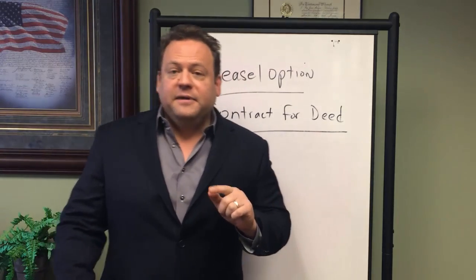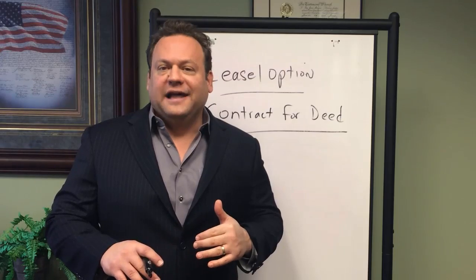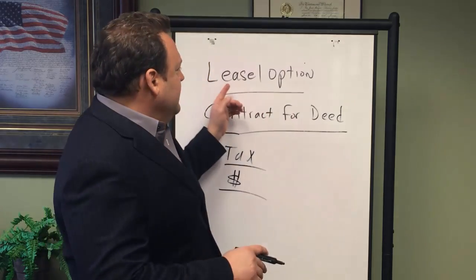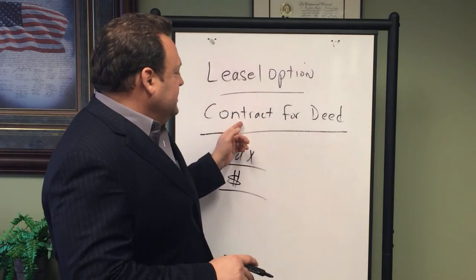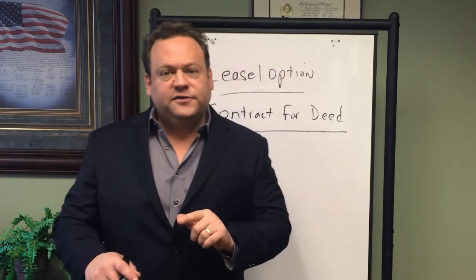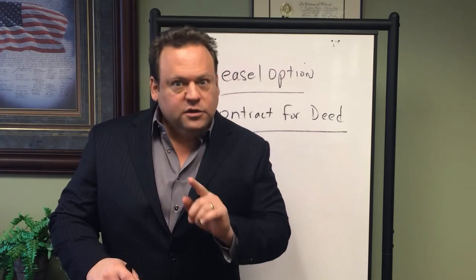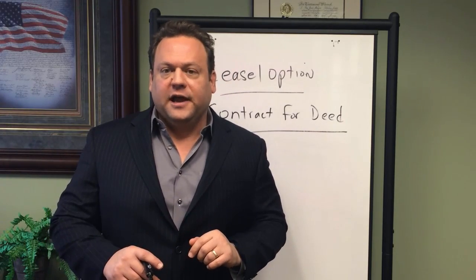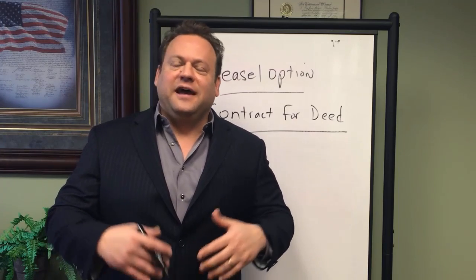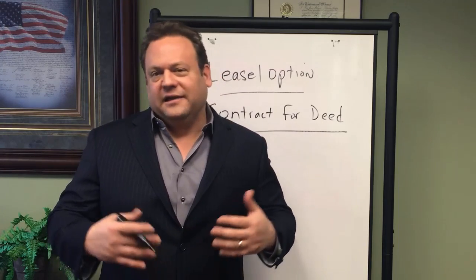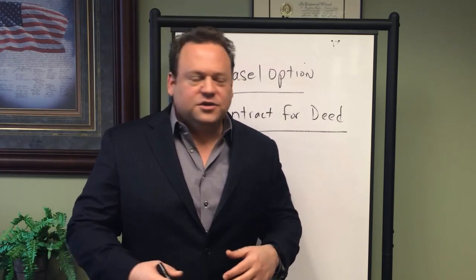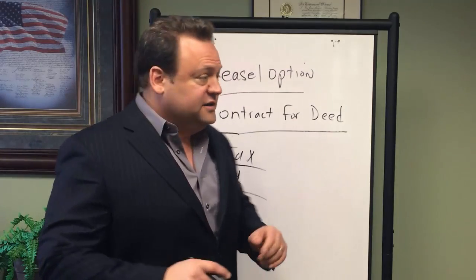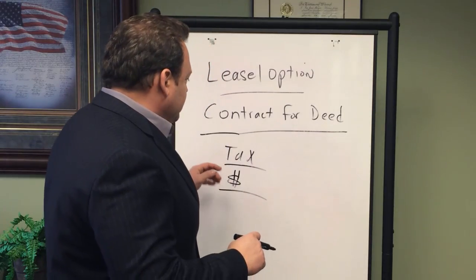Either one can be done with an underlying loan left in place. Both a lease option and a contract for deed, even though title doesn't transfer, will trigger a due on sale or acceleration clause on the underlying mortgage. But since title hasn't transferred, a bank is likely not going to find out, so it's generally a non-issue. Just be aware that either one does technically trigger the due on sale clause.